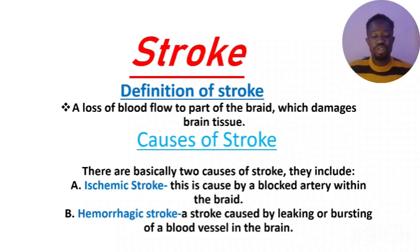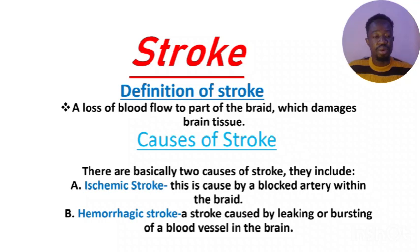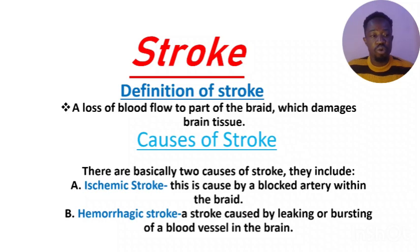So we have two types of stroke. We have ischemic stroke and hemorrhagic stroke. Ischemic stroke is a blockage of the arteries within the brain that carry blood to the brain, leading to cell death. Hemorrhagic stroke is a leakage of blood within the brain that leads to decreased oxygen demand by the brain, which will also cause stroke.